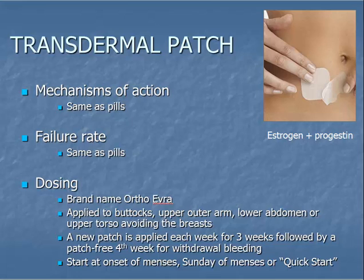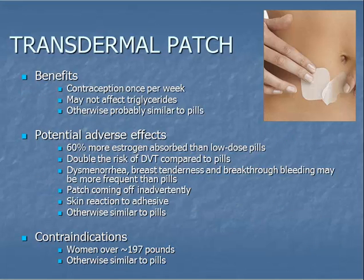The transdermal patch is a skin-adhesive form of contraceptive applied to certain areas of the skin weekly for three weeks, with a subsequent patch-free fourth week to allow for menses to occur. The patch contains estrogen plus a progestin and has similar mechanisms of action and failure rate as oral contraceptives. The patch has multiple benefits and potential adverse effects. A higher level of estrogen is absorbed from the patch than from other combined hormonal contraceptives, which can lead to increased adverse effects such as deep vein thrombosis. The patch is also not as effective for women over the weight of about 197 pounds.